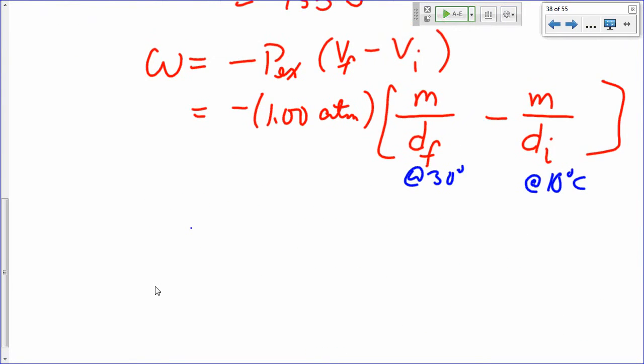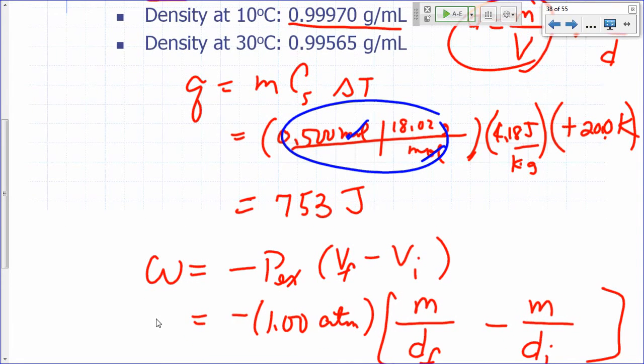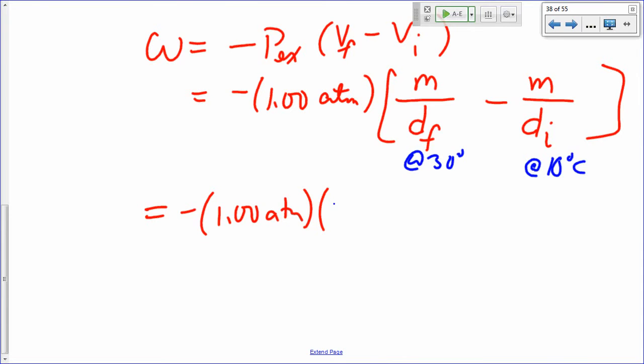So let's factor out our mass. So that's going to be minus 1.00 atmospheres. What's the mass of our water? Half of 18, right? This is the mass of water. So that's 9.01.